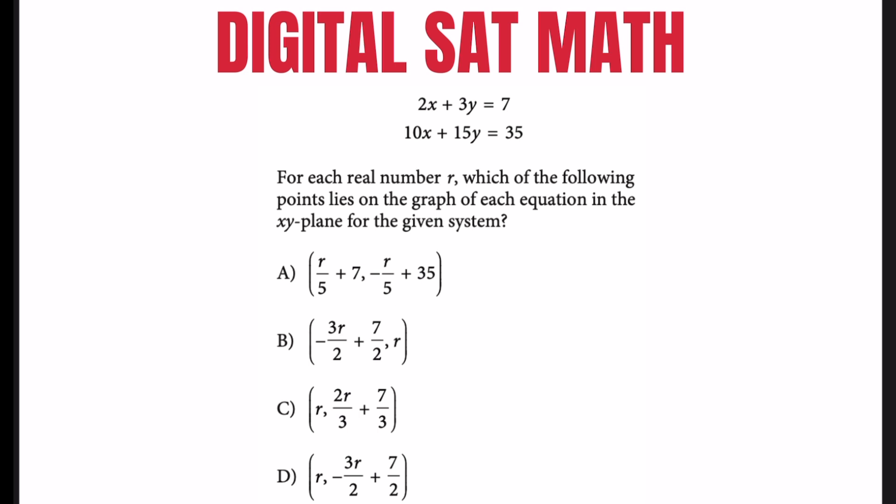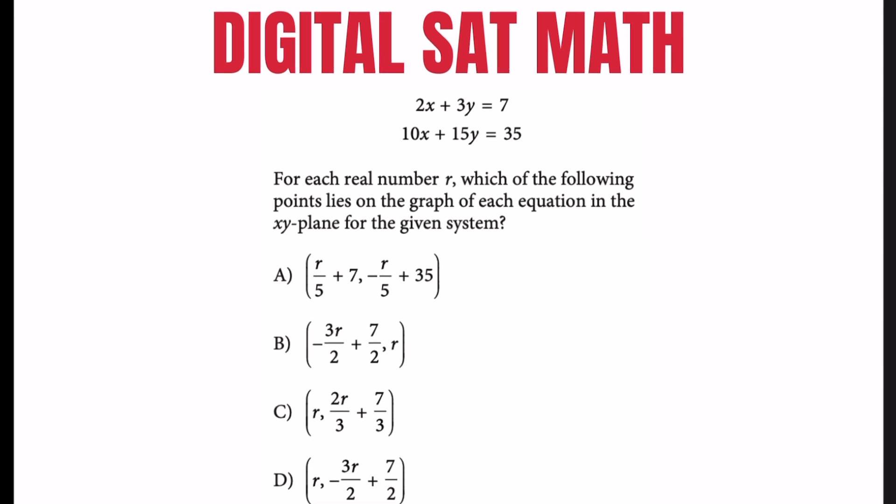To solve this equation, they're saying you can give any value to r. So let's say x equals r. I'm going to use the first equation to do substitution. This becomes 2r plus 3y equals 7. I'm going to take away 2r from both sides: 3y equals -2r plus 7. Divide both sides by 3, so y will be -2r/3 plus 7/3.